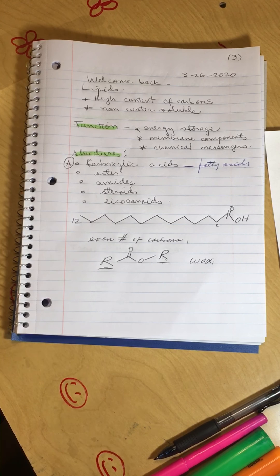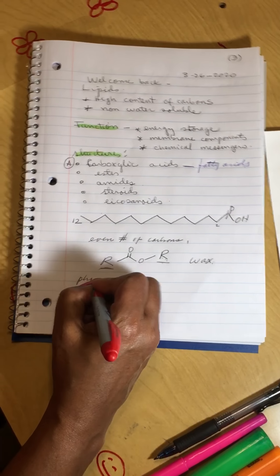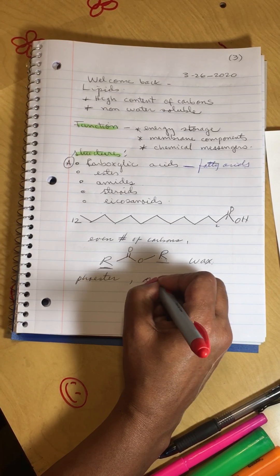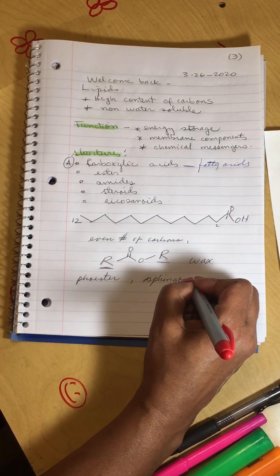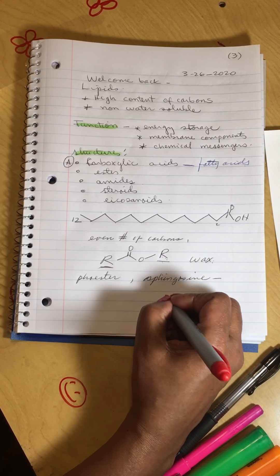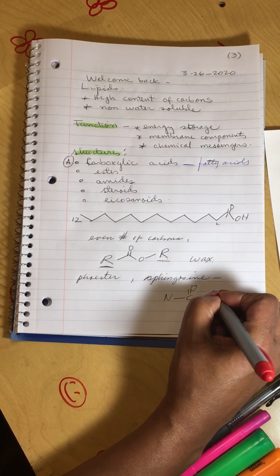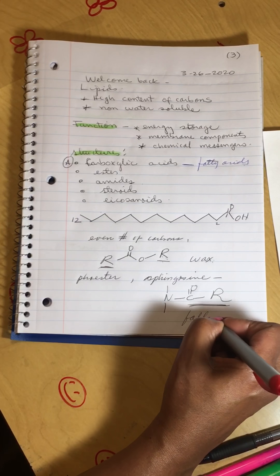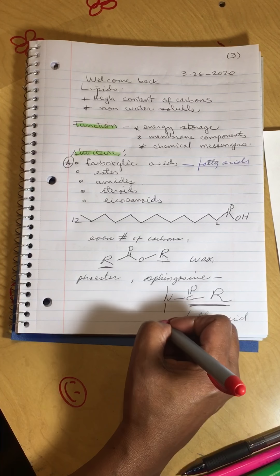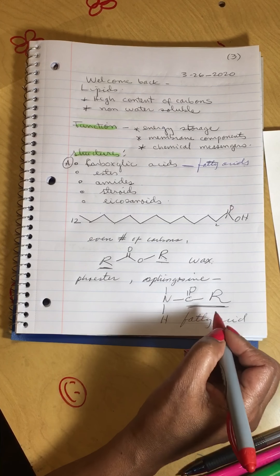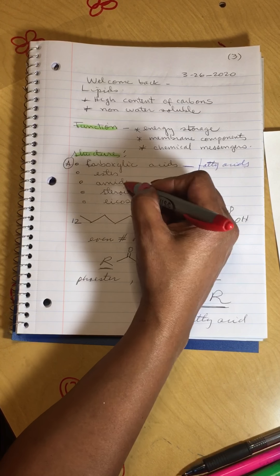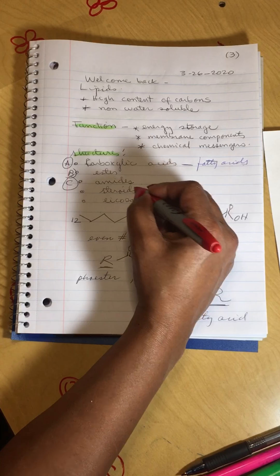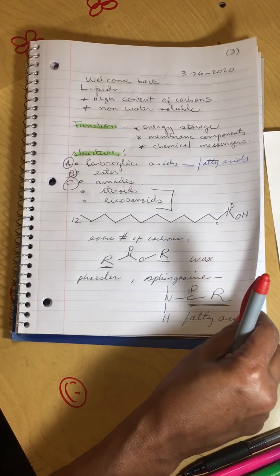Another bond we will find in this family is a phosphoester. We also have an amide bond, and if it is an amide, you will most likely have the unit of sphingosine, which we're going to describe in a bit. The amide bond is attached to the very long hydrocarbon chain fatty acid, which reacts with an amine to make an amide. So we have three types: fatty acid, ester/wax, and amide.